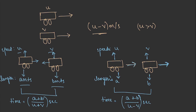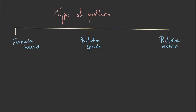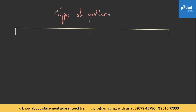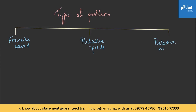Let us jump into the types of problems. There are three types of problems on trains. The first one is purely formula-based, the second is based on relative speeds, and the third is relative motion. We have learned formulas for all of these, so let us jump into the first type of questions.